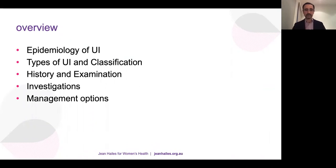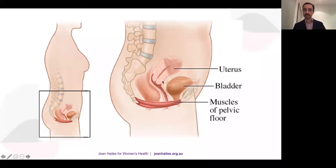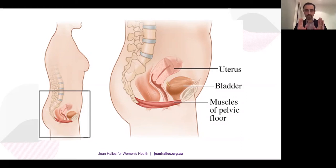The overview will cover epidemiology, different types and classification of urinary incontinence, what goes into history and examination, how to investigate, and management options. This slide shows the pelvic floor muscles at the bottom of the female pelvis with three main organs. In the anterior compartment you have the bladder, bladder neck, and urethra. In the middle or apical compartment, the uterus and cervix. In the posterior compartment, the rectum and anal sphincter complex. We're going to focus on urinary incontinence, so the anterior compartment.